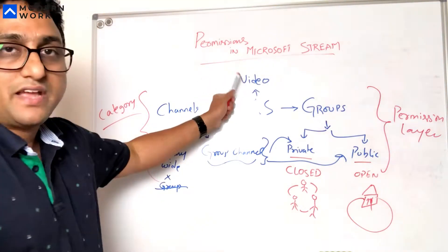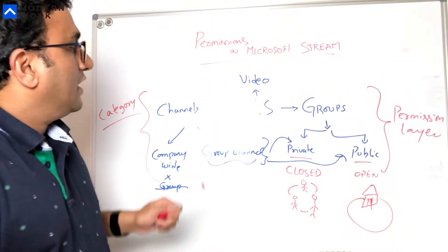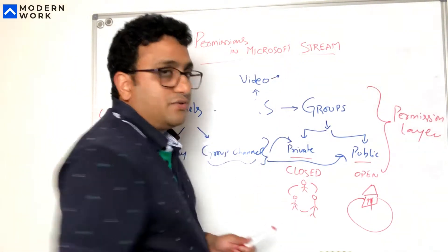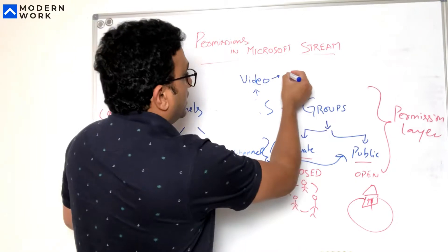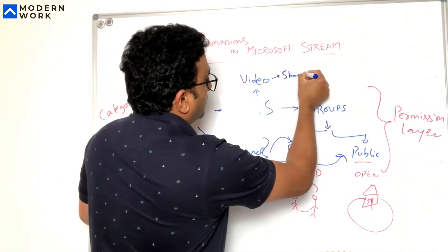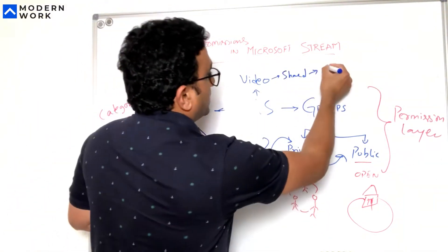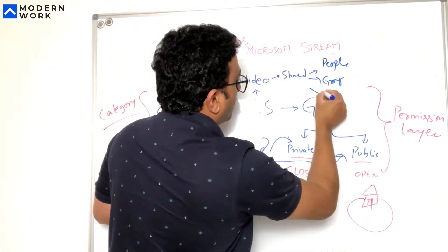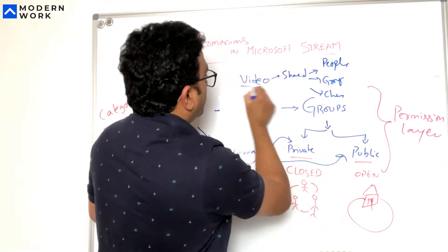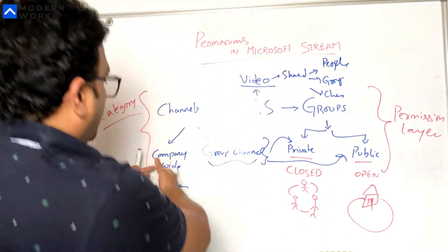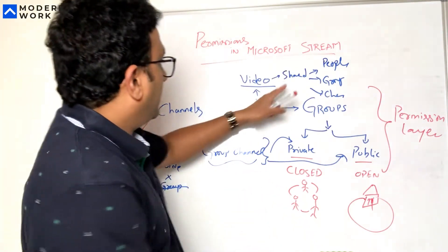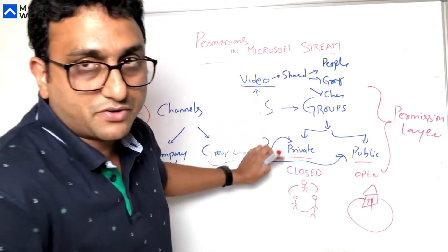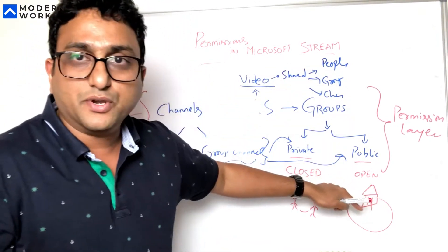Then we're coming to the videos itself. When you upload a video, it asks you like who am I actually going to share with. You can share a video with people, groups, or channels. So you can say this video will go into a company-wide channel, or this video will go into a group channel which is already part of a group, or you can say it can just straight away go into a group as well.